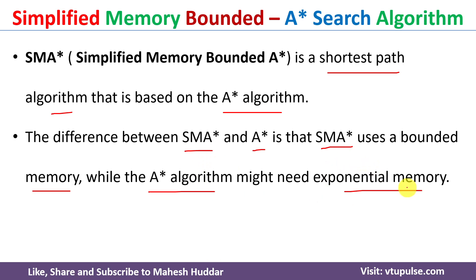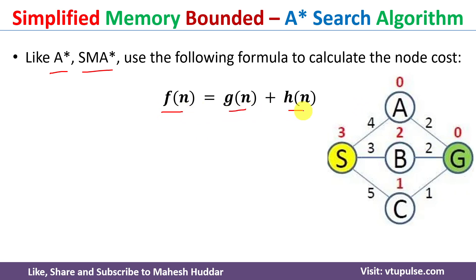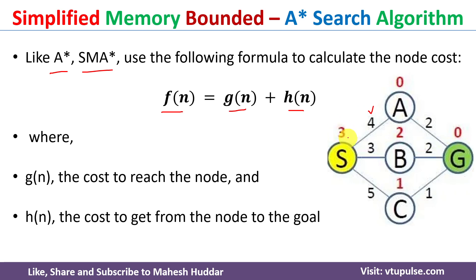To overcome this exponential memory usage, we use SMA*. Like A*, SMA* uses the same formula to calculate the cost of each node: f(n) = g(n) + h(n). Here g(n) is the actual cost to reach from one node to another — for example, 4 is the actual cost to reach from S to A — and h(n) is the heuristic value, the probable distance to reach the goal node.